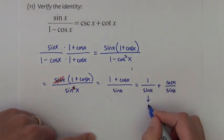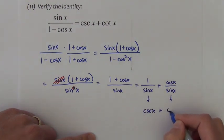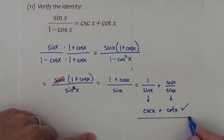One over sine is cosecant. Cosine over sine is cotangent. And we have proven it.